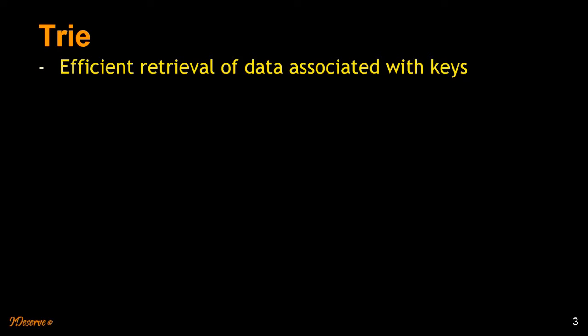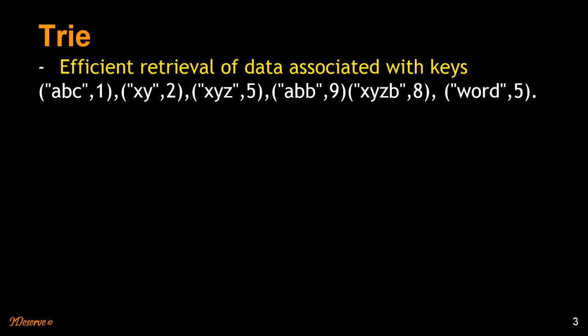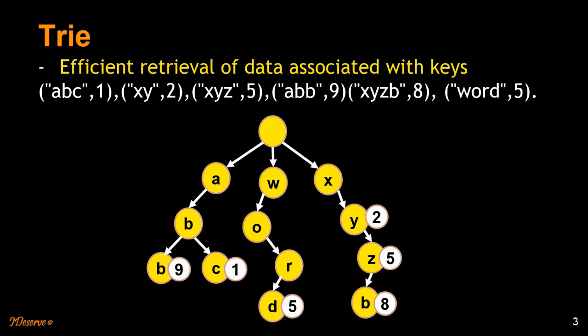So Trie is very useful for designing efficient retrieval of data associated with keys. What I mean by that is, for example, if we have data like this in the form of key value pairs, so ABC corresponds to 1, XY corresponds to 2, ABB corresponds to 9 and so on. If we represent these in Trie, this is how it will look like.